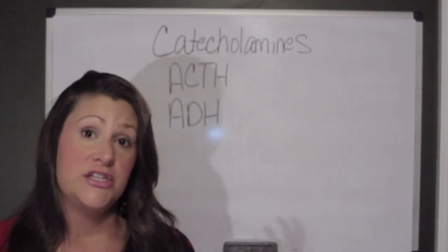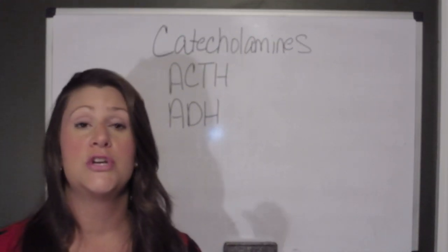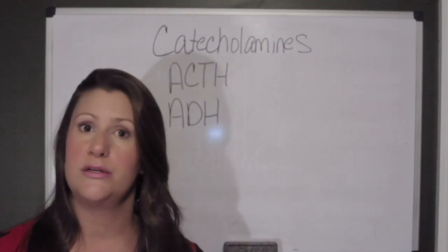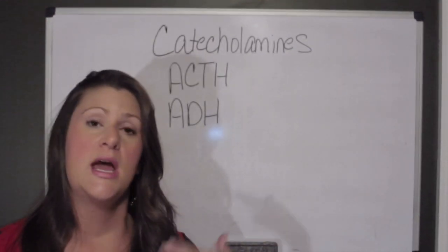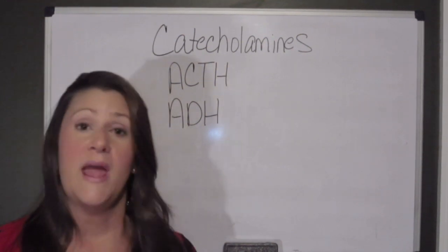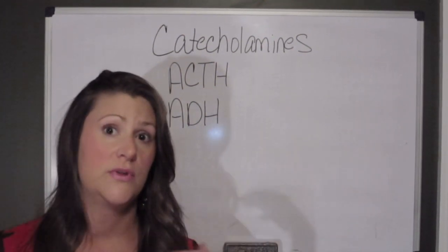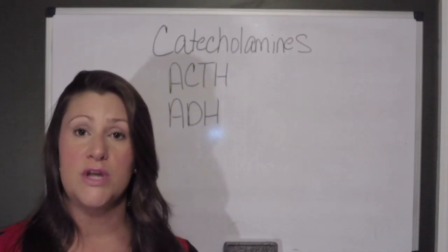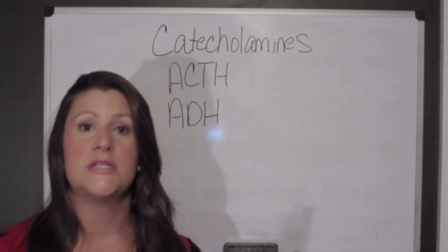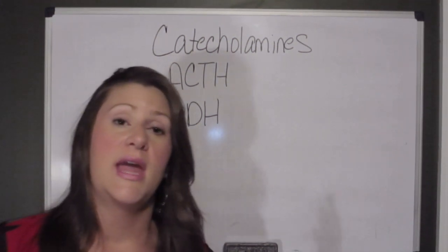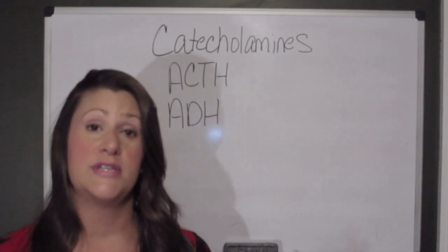ACTH is released from the anterior pituitary and goes directly to the adrenal cortex, stimulating the release of aldosterone and cortisol. Cortisol fights inflammation and also increases blood glucose. Aldosterone causes sodium and fluid retention to help increase circulating volume.